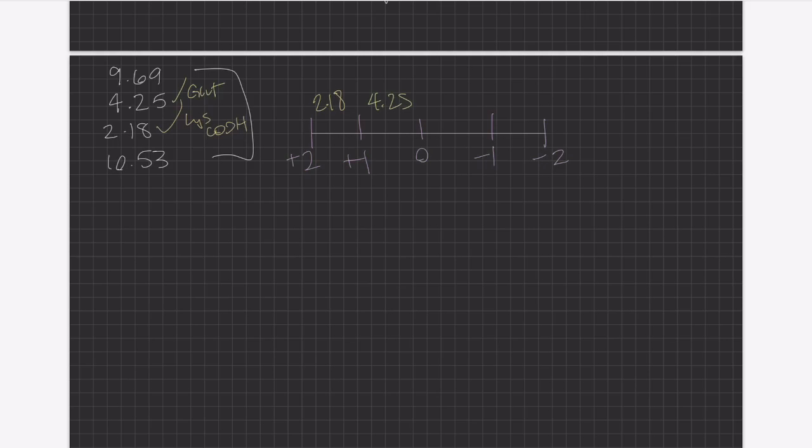So, now we're past zero on the number line. This is a charge of zero. So, now we're going to be considering basicity in our calculation.